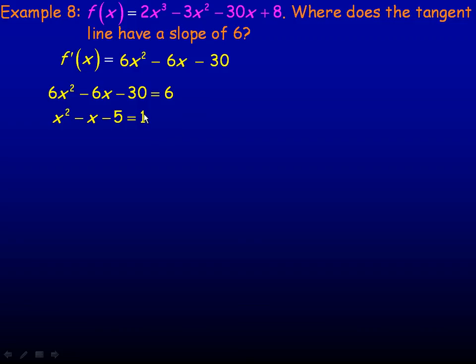So I'll rearrange, subtract 1 from both sides or bring the 1 over, and get x² - x - 6 = 0. Look for two numbers that add to -1 and multiply to -6, which of course would be -3 and +2. So this will factor into (x - 3)(x + 2).